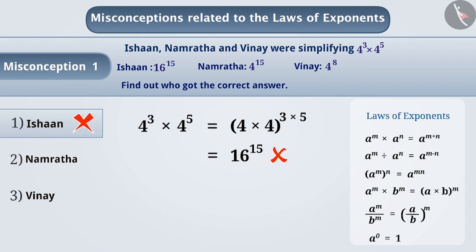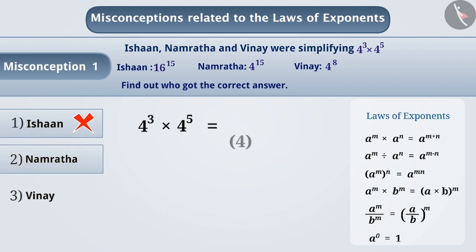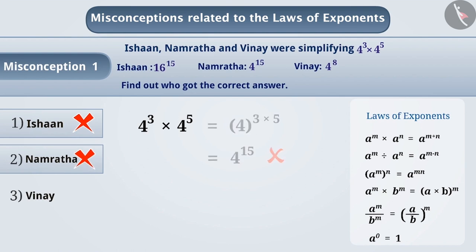In the same way, Namrita kept the base the same, but to get the power of the answer, she multiplied the exponents of the numbers. Therefore, she got 4 to the power of 15, which is also the wrong answer.